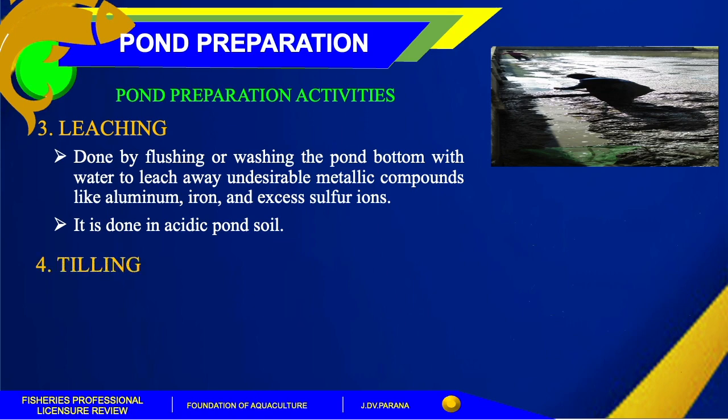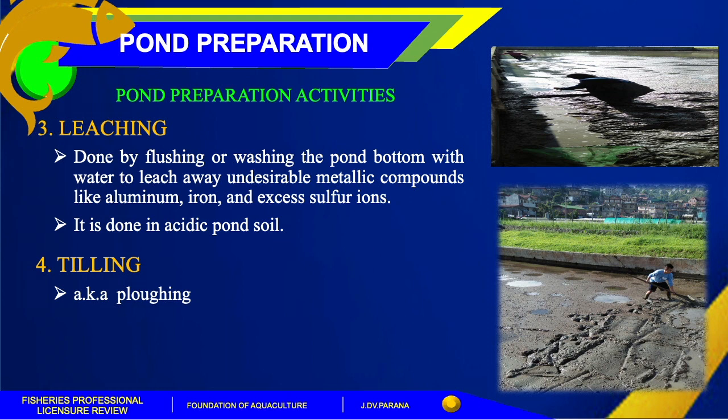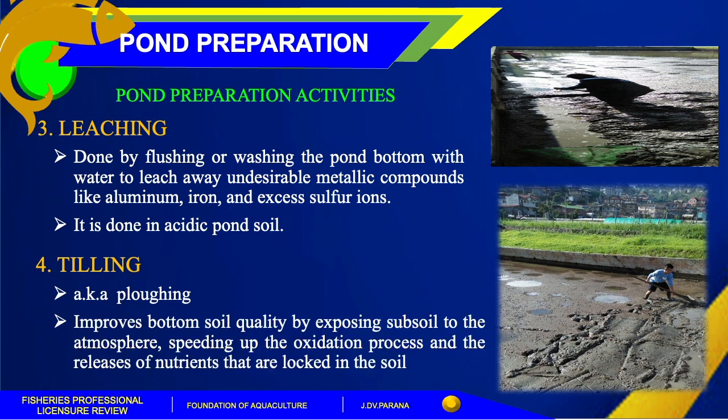The third activity is leaching, done by flushing or washing the pond bottom with water to leach away undesirable metallic compounds like aluminum, iron, and exo-sulfur ions. It is done in acidic pond soil. The fourth is tilling, also known as plowing. It improves the bottom soil quality by exposing subsoil to the atmosphere, speeding up the oxidation process, and releasing nutrients locked in the soil. This is done with a rake, shovel, plow, and others.